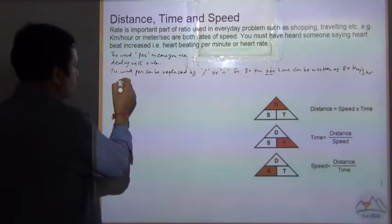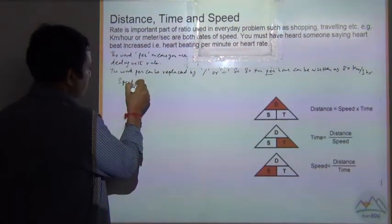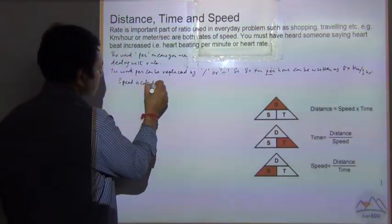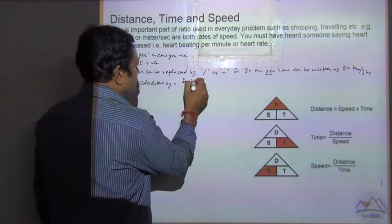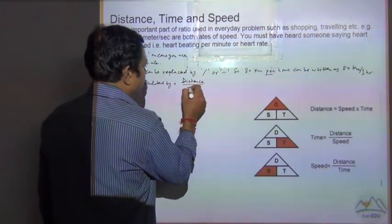So speed is calculated by distance divided by time.